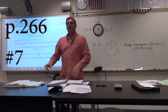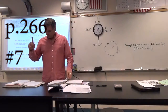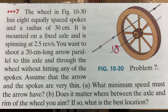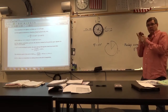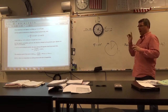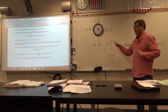Problem number seven involves a wheel spinning two and a half revolutions per second, divided into eight sections because there are eight spokes. You can think of each section as a pie wedge. I want to shoot an arrow that's 20 centimeters long and make it through there while the wheel is rotating without hitting a spoke.